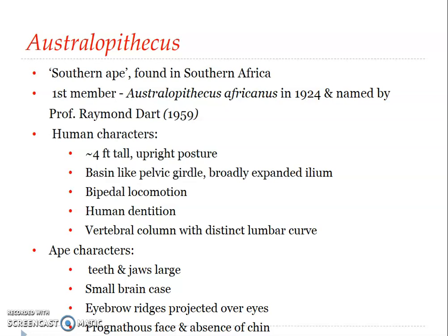Australopithecus had a small brain case with a brain capacity of up to 600 cubic centimeters, while the smallest normal brain capacity of a modern woman is about 900 cubic centimeters. Other ape-like features include eyebrow ridges projected over the eyes, a prognathous face, and absence of a chin. So this fossil showed both human and ape characters.